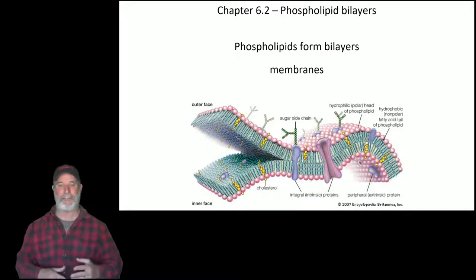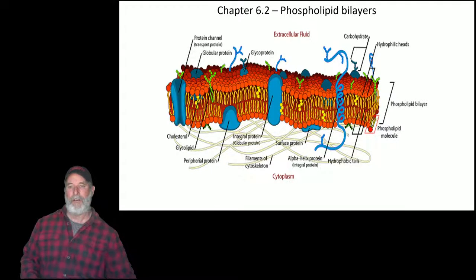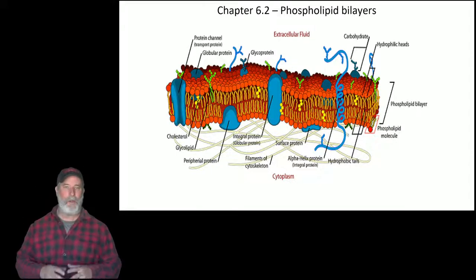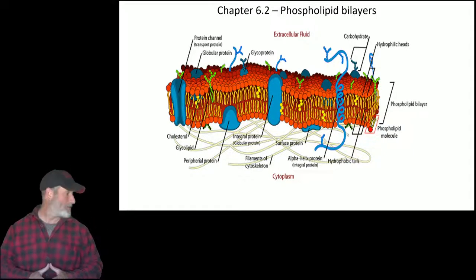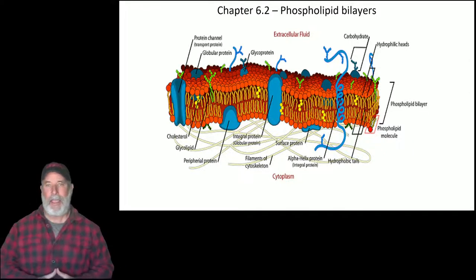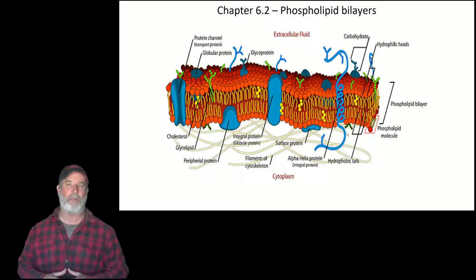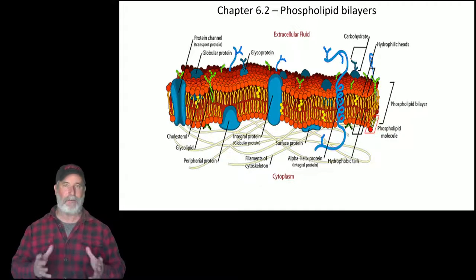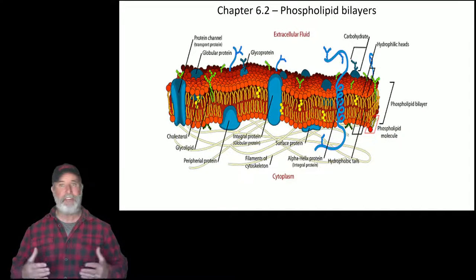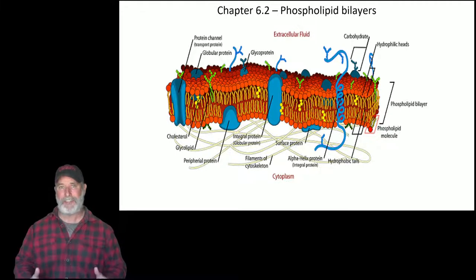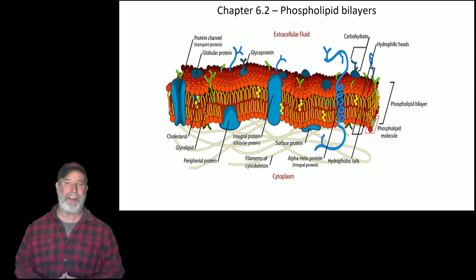Phospholipid bilayers are cellular membranes, and organelles — those tiny membrane-bound structures inside eukaryotic cells — are also made up of a phospholipid bilayer. You may also hear the term plasma membrane. So the three terms are: phospholipid bilayer, plasma membrane, and cellular membrane. In the image you can see those phosphate heads and the fatty acid tails in yellow, with lots of proteins embedded in the membrane.